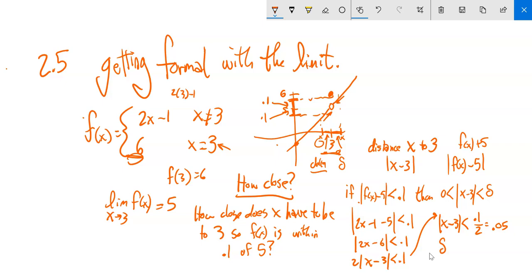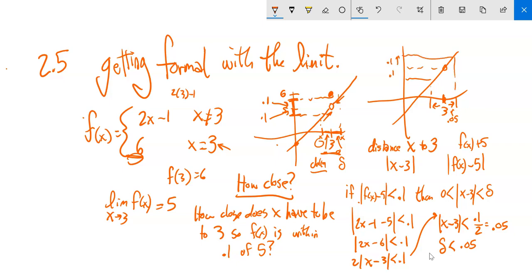So delta is less than 0.05. On the graph, if I pick something that's less than 0.05 away from 3, I can guarantee that my output will be within 0.1 of 5. And if that's not close enough, just change the value — if you make the tolerance 0.01, it's the same thing: 0.01 divided by 2. No matter how close you tell me you want the output tolerance to be, I can make the input tolerance smaller and it's guaranteed to fit within there. That's much more formal than 'getting close enough.'